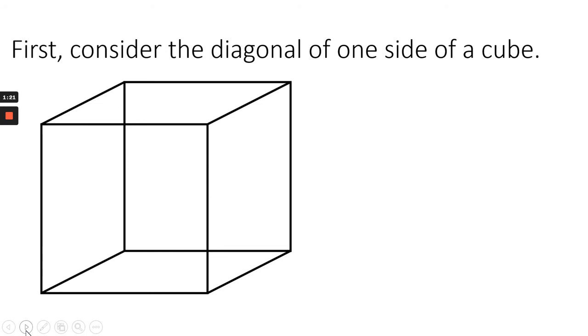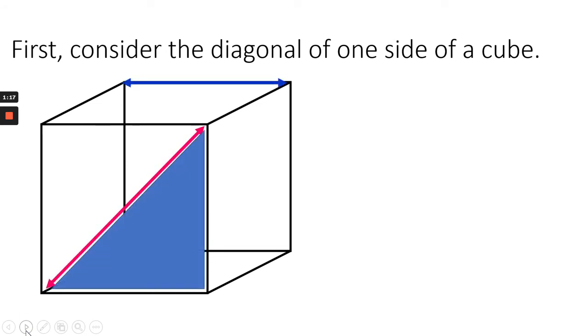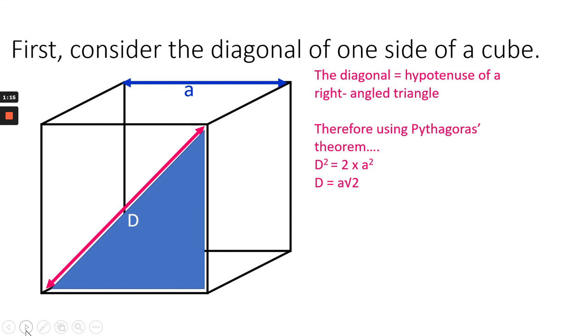So looking at a diagonal of one side of a cube, obviously, if you take the length A, then Pythagoras' theorem suggests that the length of that diagonal, D, is A root two. Remembering Pythagoras' theorem, the square root of the hypotenuse is the sum of the square root of the two sides.